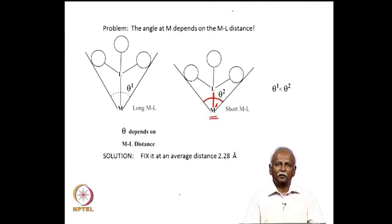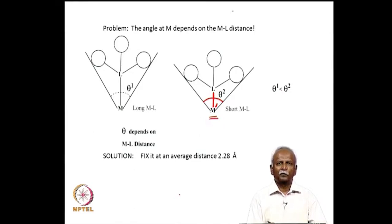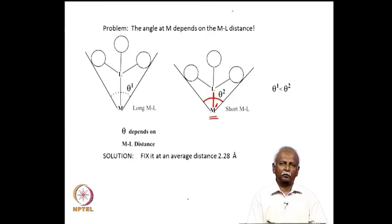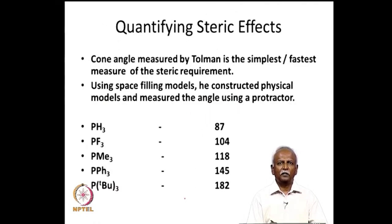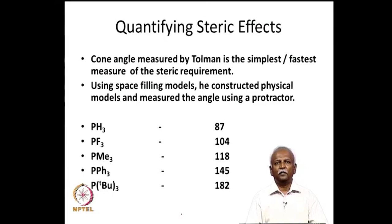Tolman's simple solution was to fix the metal-ligand distance for all measurements. He fixed it at 2.28 Å. When making models, he kept the distance at 2.28 Å and then measured the angle subtended at the metal atom. Using this standardized approach, he measured various cone angles for different phosphine ligands.